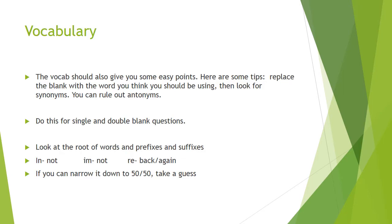The first and easiest section for most people to earn points is the vocabulary section. There are two different types of vocabulary questions: single blanks and double blanks. Generally, the best tip is to replace the blank with the word you think should go there, then look for synonyms—that'll help you rule out antonyms. The general rule for the PSAT and SAT is that if you can rule out some answers and narrow it down, go ahead and make a guess. You lose a quarter of a point for wrong answers, but you don't get any deductions for questions you omit.